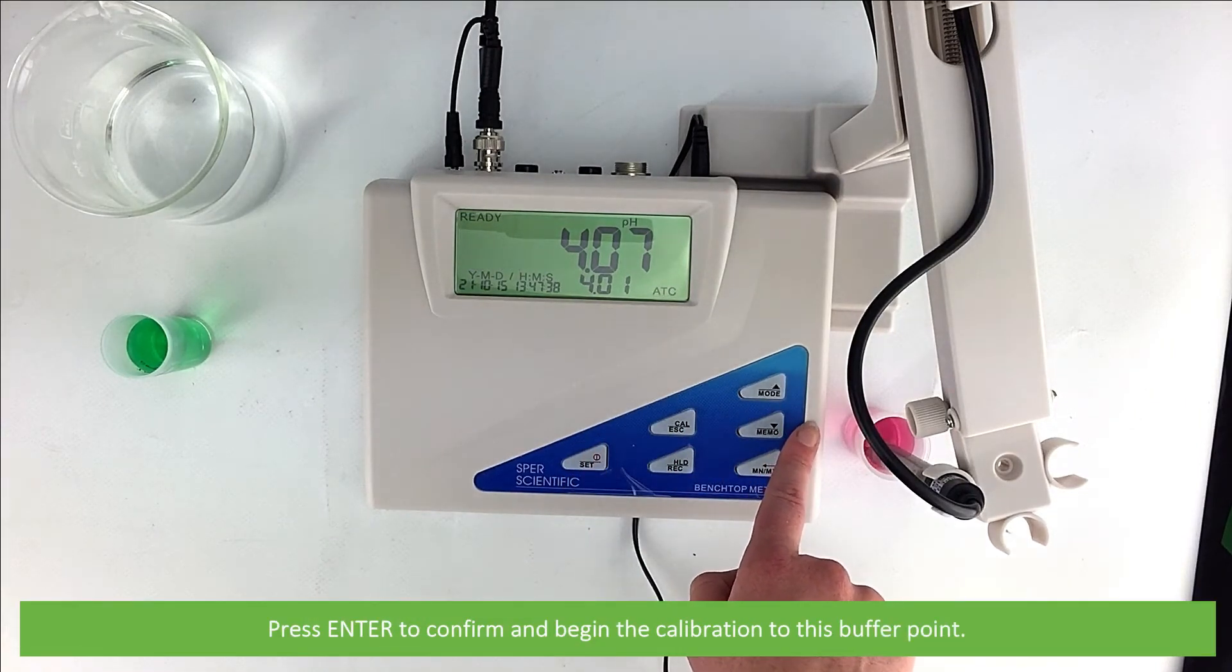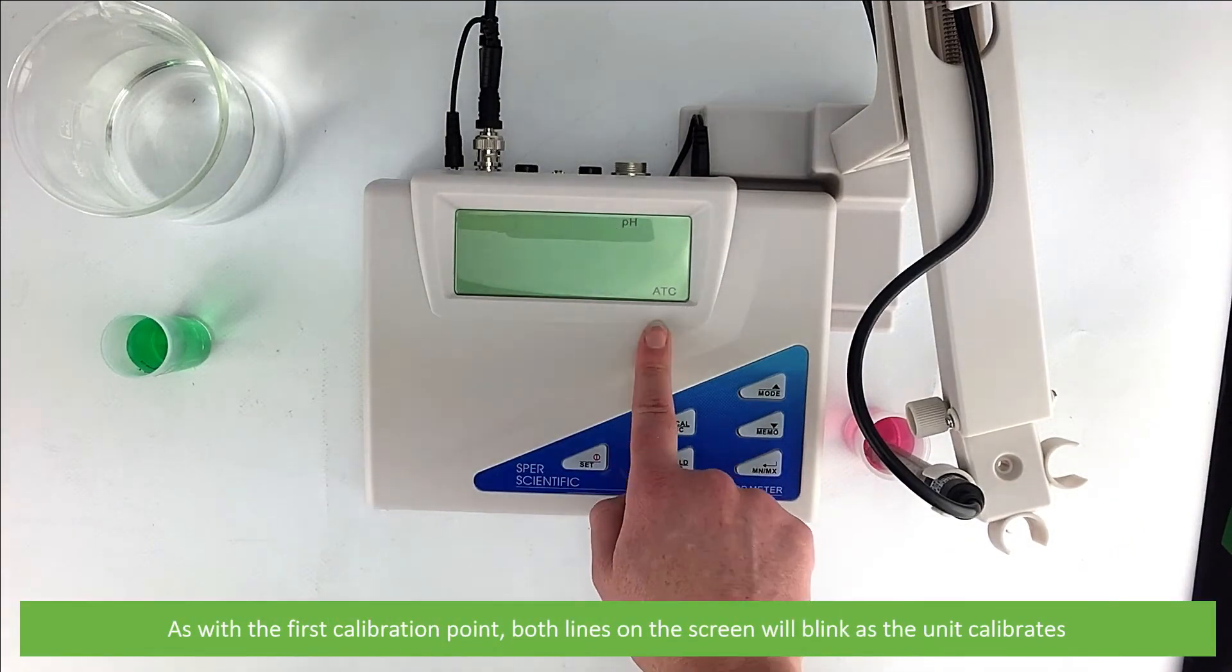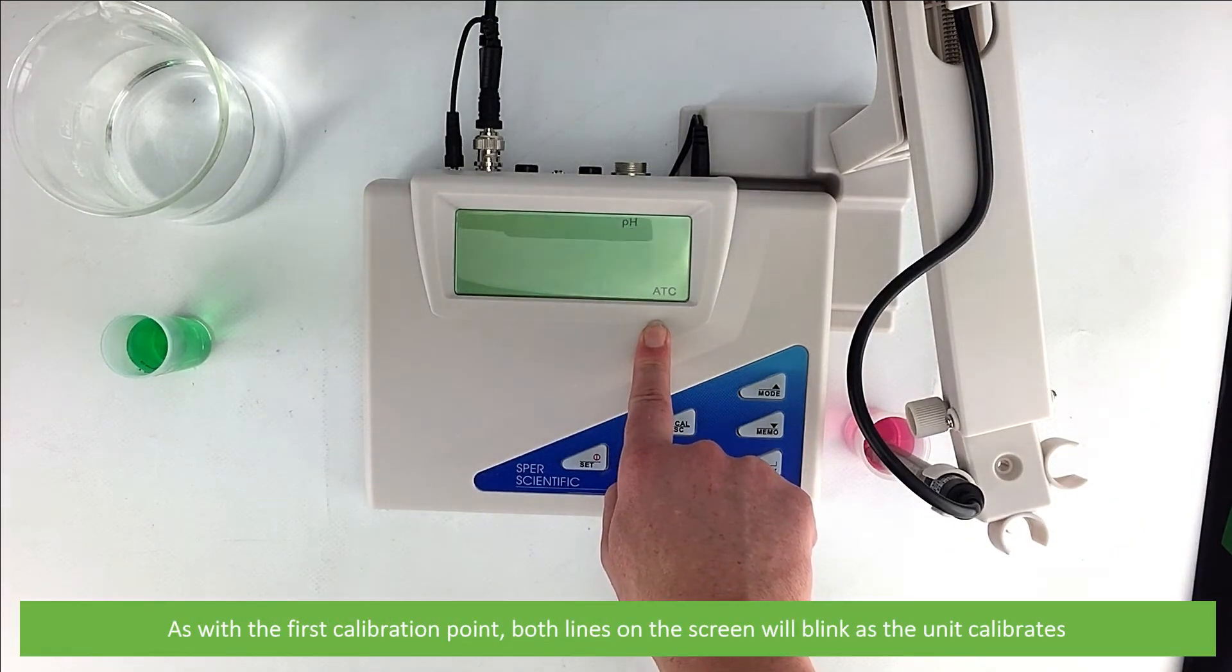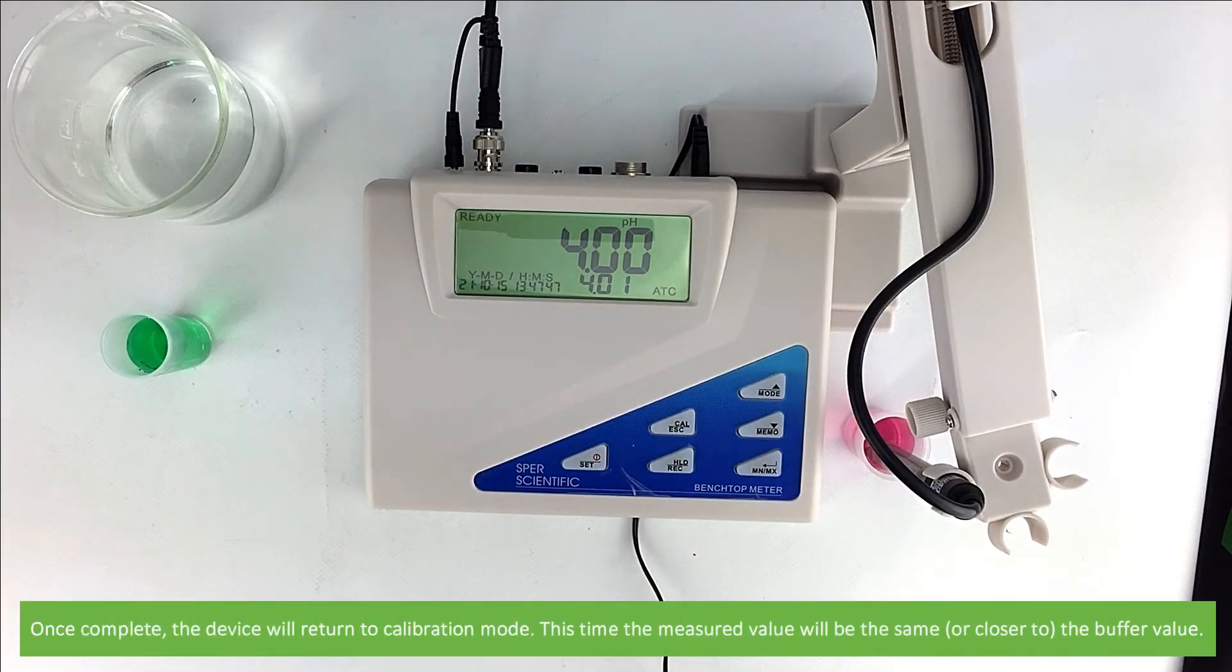Press enter to confirm and begin the calibration to this buffer point. As with the first calibration, both lines on the screen will blink as the unit calibrates. Once complete, the device will return to calibration mode.